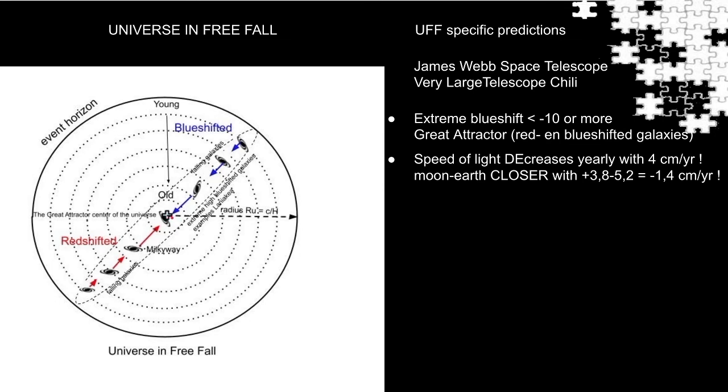Now the most controversial claim in the UFF model. Because of the isochronous layers, time will run slower and even stop in the center. The speed of light will decrease yearly with a factor 1 divided by the radius of the universe. All clocks on Earth will also run slower every year by this factor. Take both factors into account and the speed of light will decrease with about 4 cm per year.